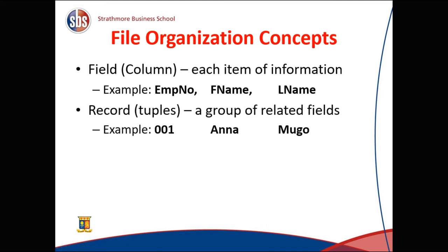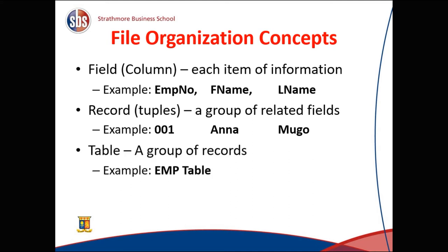Records, or tuples, are a group of related fields. For example, 001 is the employee number, Ana is the first name, Mugu is the last name — that is one record. In a class with 60 students, we can have 60 records. A table is a group of records — an employee table could have 100 or 200 employees.